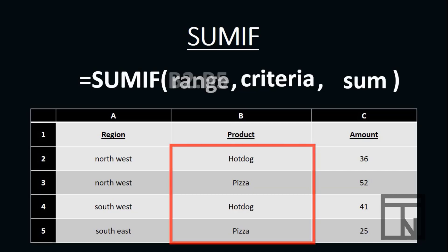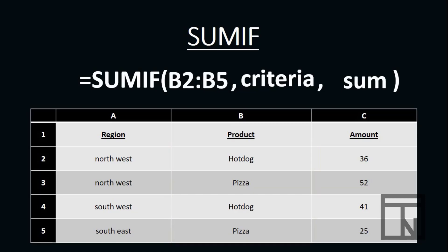Our range would be cells B2 to B5. Then we have the criteria — in B2 to B5, what are we looking for? We're looking for the product hot dog. So our criteria is the word hot dog. But inside Excel, anytime we're looking for a word or using text, that text always has to be in quotation marks. So we're going to add quotation marks around the word hot dog.